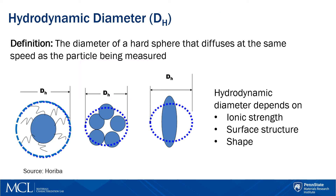The hydrodynamic diameter is a hard sphere that diffuses at the same speed as the particle being measured. So regardless of the particle type or shape — whether it is a core-shell particle, an aggregate of several smaller particles, or a particle with an irregular shape — we still use a sphere to model particle diffusion. Hydrodynamic diameter depends on ionic strength, surface structure, and particle shape.